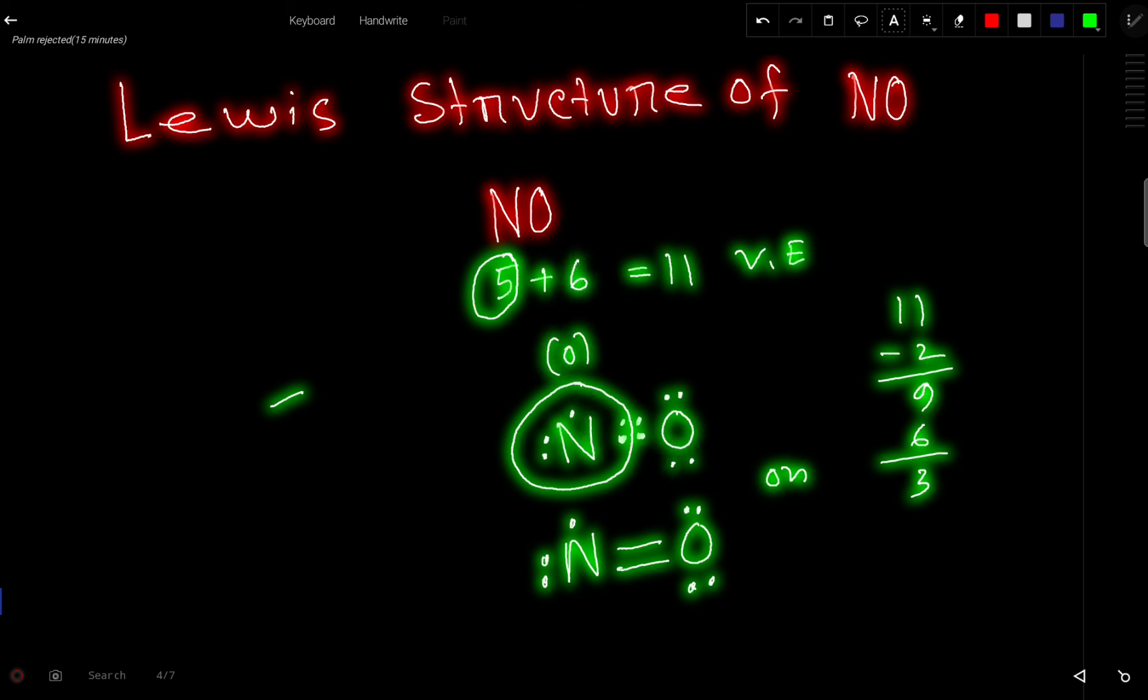In a neutral atom oxygen has six, and here we have six. So the formal charge of oxygen is zero. We know that zero formal charge indicates that this is the stable Lewis structure of NO.